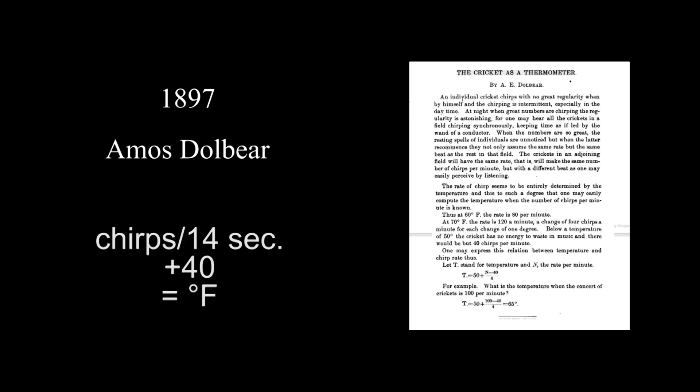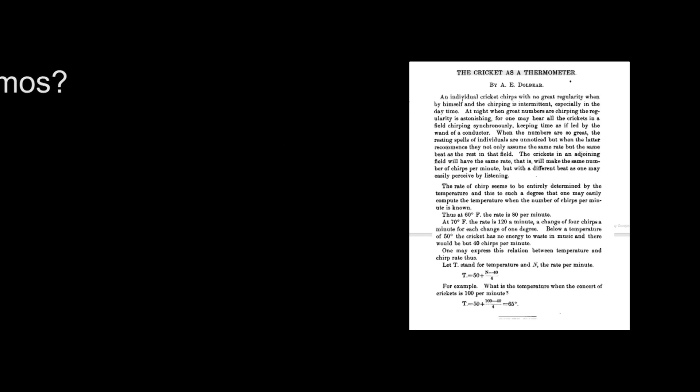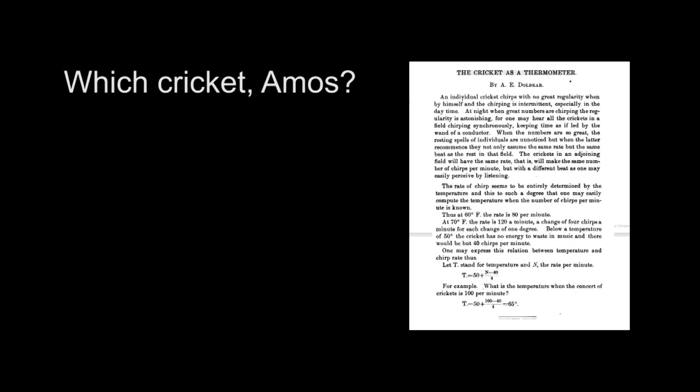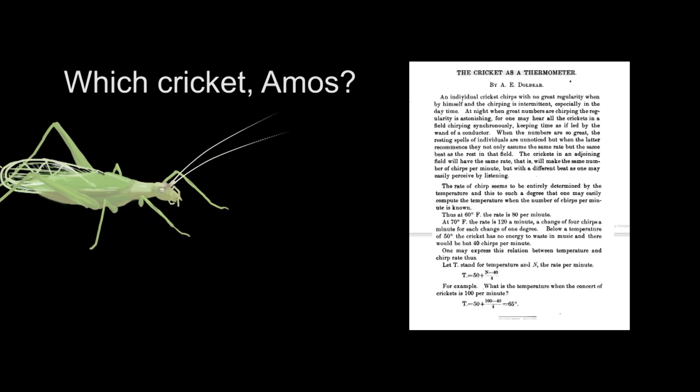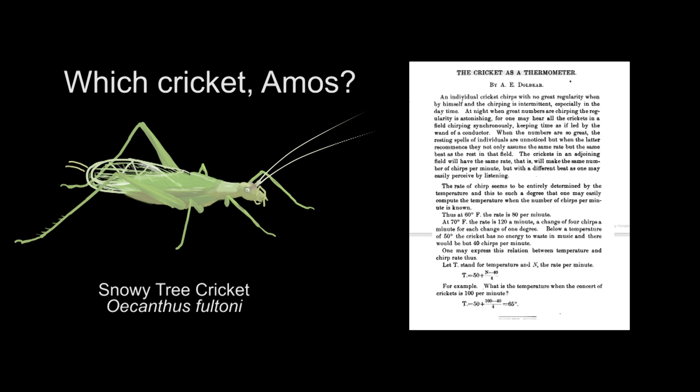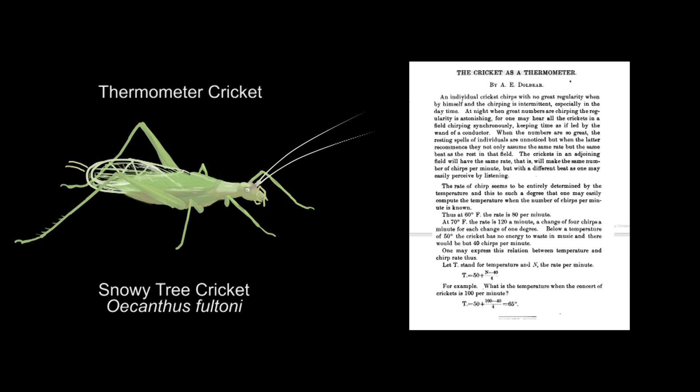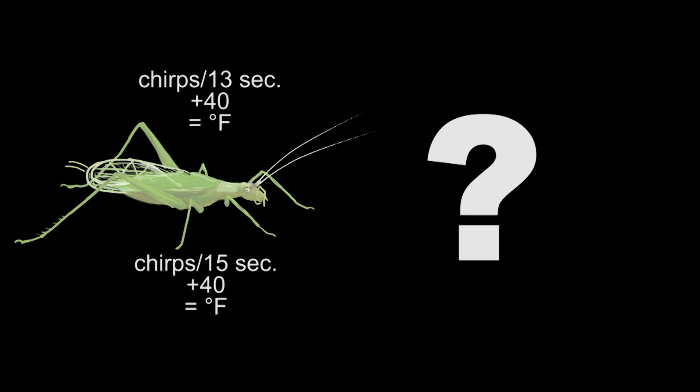You count chirps for 14 seconds, then add 40, and you get the temperature in Fahrenheit. Dolbear didn't mention the species in his study, although future scientists deduced that he was using the snowy tree cricket as his benchmark. Because of this, the species is also called the thermometer cricket, and it's one of the most predictable species in regards to temperature. Different formulas for this species have been published, such as counting 13 or 15 seconds and adding 40, so the exact correct formula is uncertain.